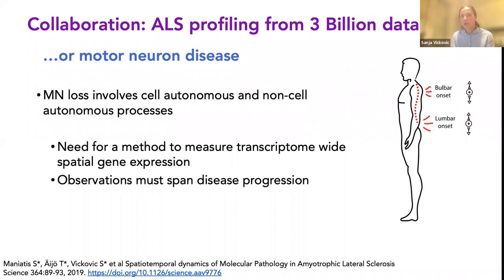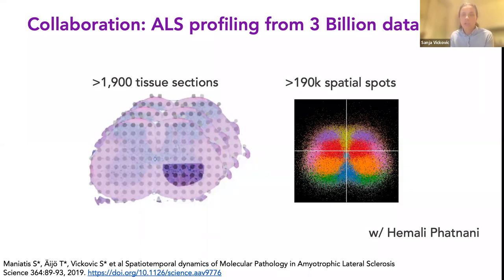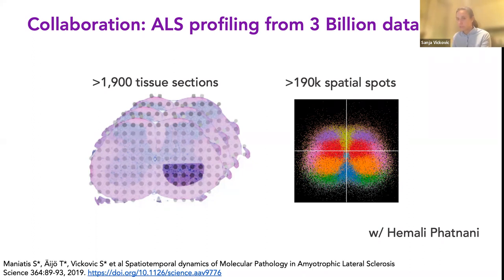We focused on the SOD1 mutation — the first mutation described — which has lumbar onset in both humans and mice. With SOD1 we know there is motor neuron loss visible on histology, and it involves both cell-autonomous and non-autonomous processes. We reasoned that by applying spatial transcriptomics in mice and then mapping to human samples, we had a chance to deconvolve what's going on with the disease over time. Over the course of a year, we collected over 1,900 tissue sections — still today the largest spatial transcriptomics dataset we ever produced. On the right-hand side you see all those tissue sections registered in a common coordinate system, color-coded by morphological areas of interest.